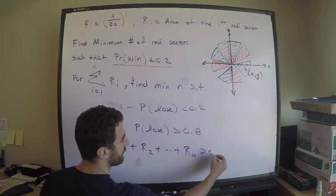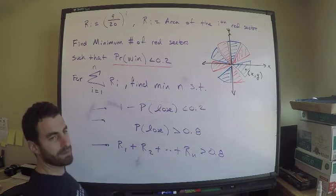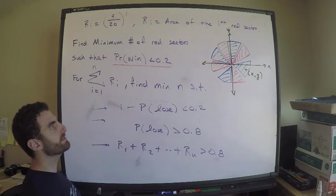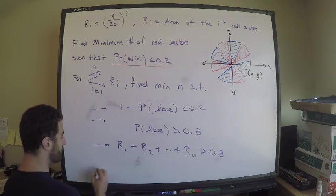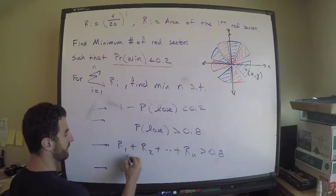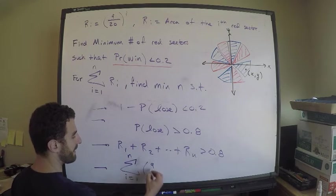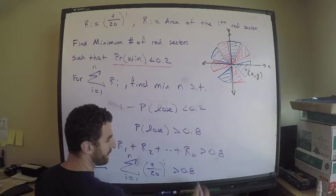I lose if I get in red sector 1 or red sector 2 or all the way up to the nth red sector. Once I solve this for n, I'm done. Equivalently, the sum from i equals 1 to n of 9 over 20 to the i is greater than 0.8.